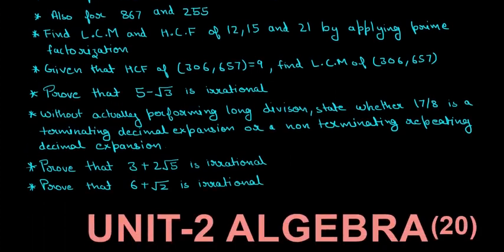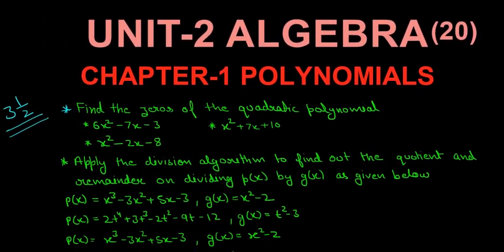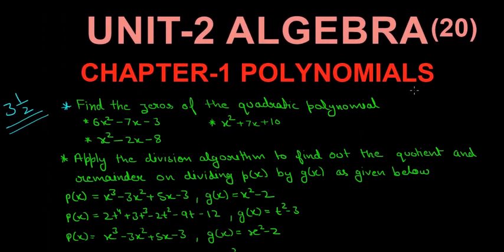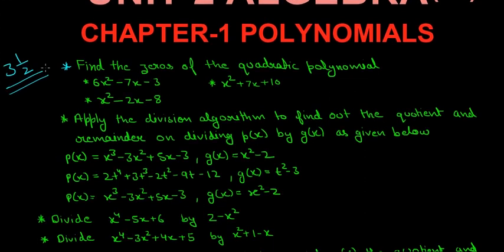The second unit is Algebra. This unit has a weightage of 20 marks and it has many chapters in it. The first chapter is Polynomials, and the most important questions of 3.5 marks were these.